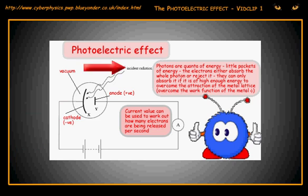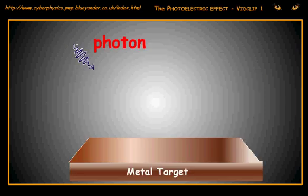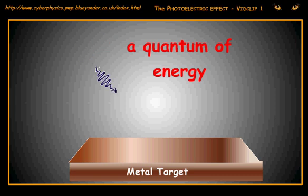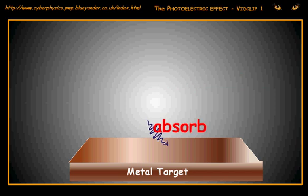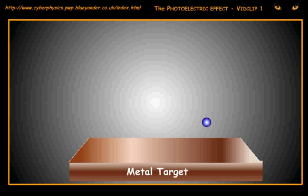The incident radiation is made up of photons of electromagnetic energy. They are quanta of energy — little packets of energy. The electrons either absorb the whole photon or reject it. They can only absorb it if it is of a high enough energy to overcome the attraction of the metal lattice.